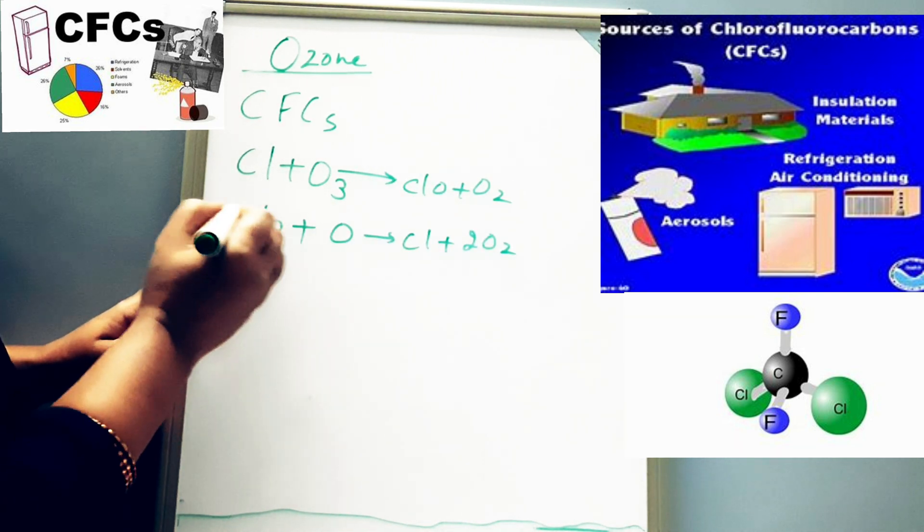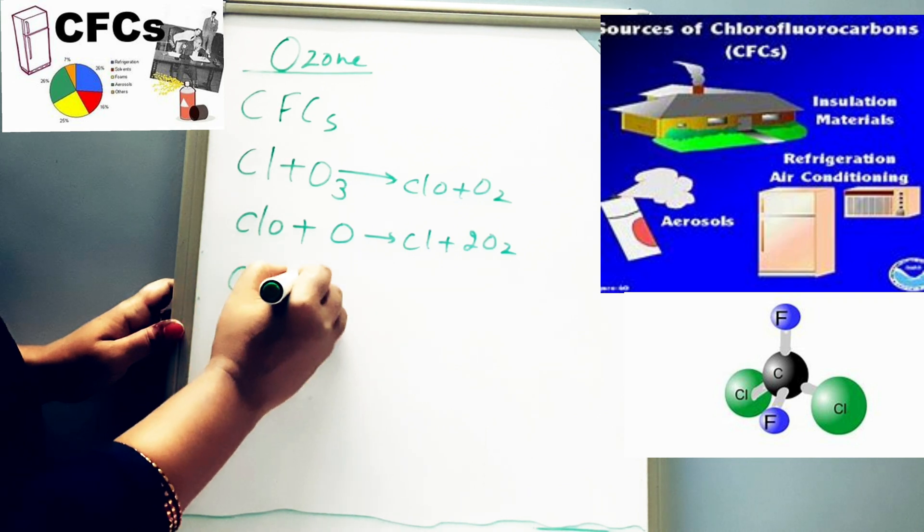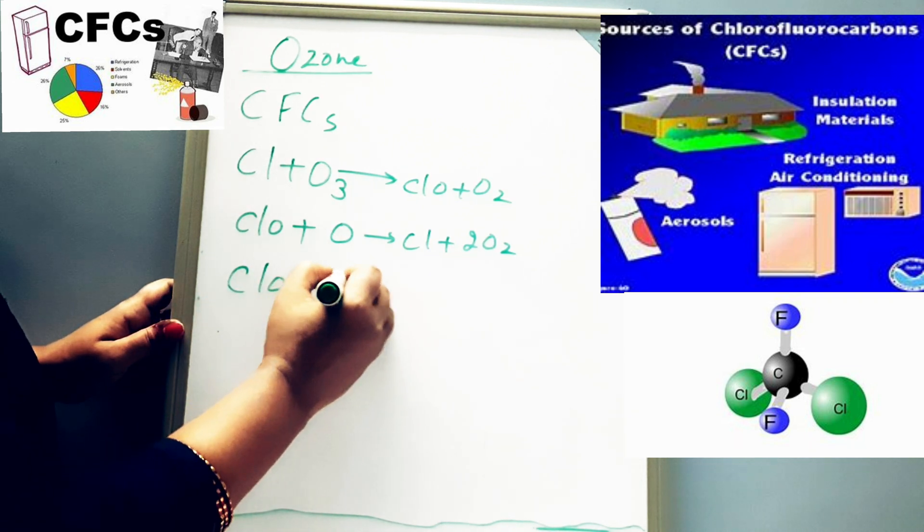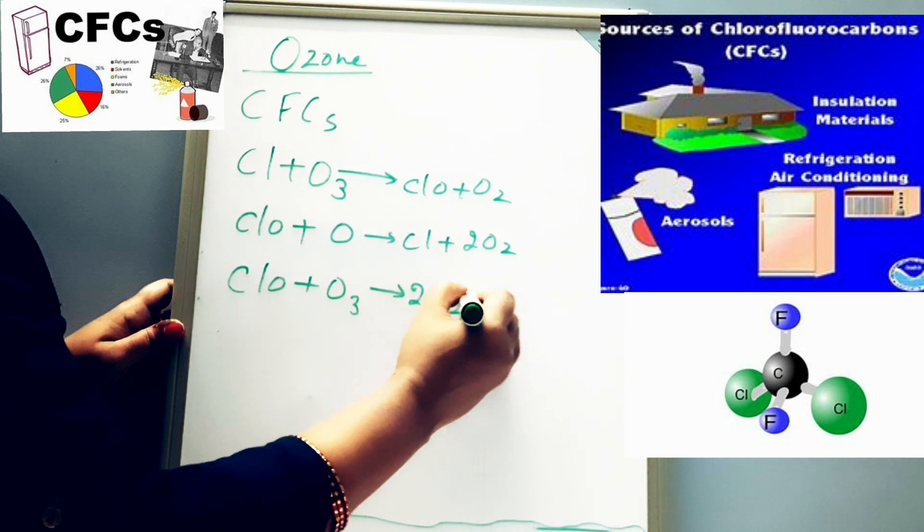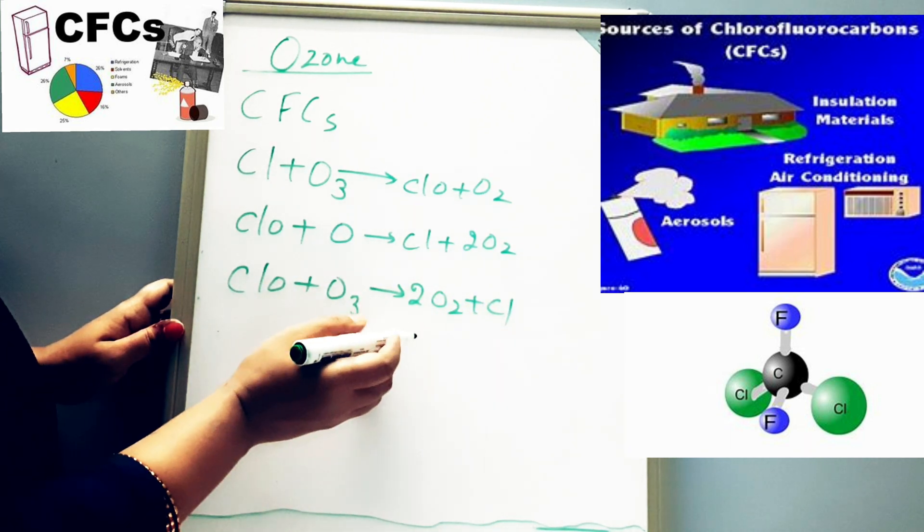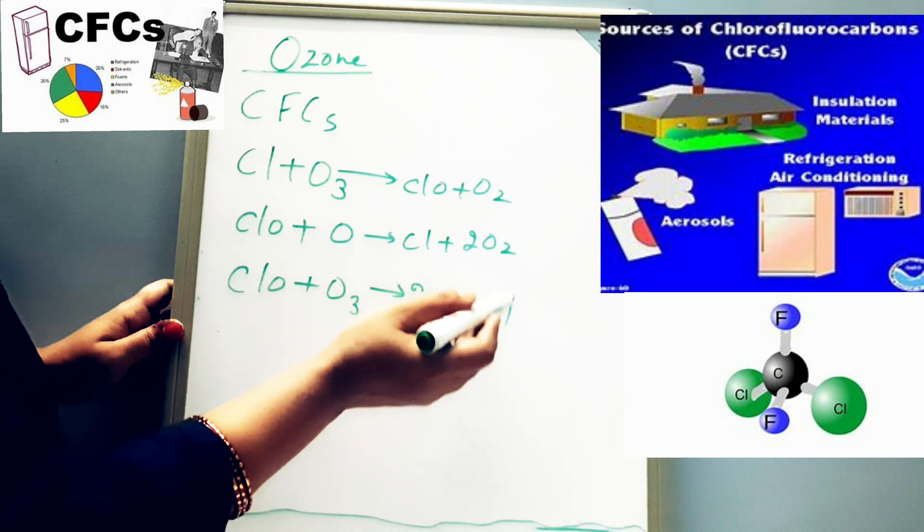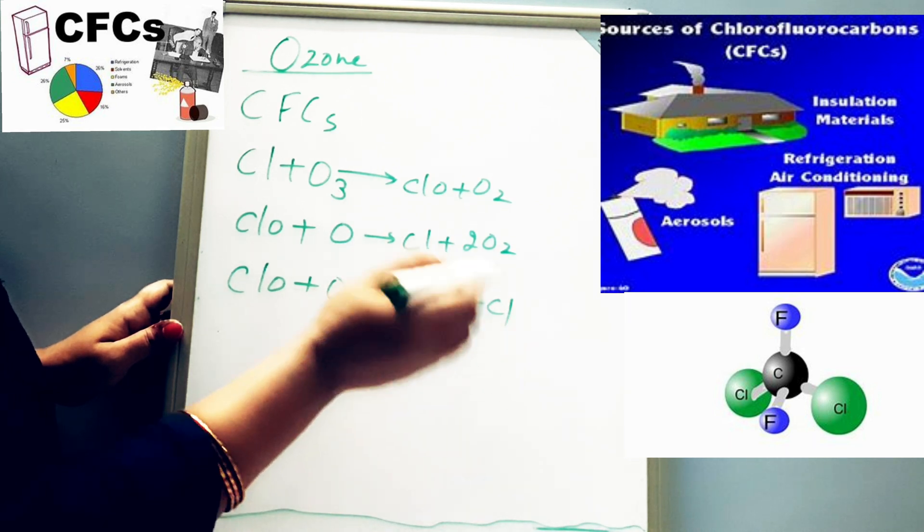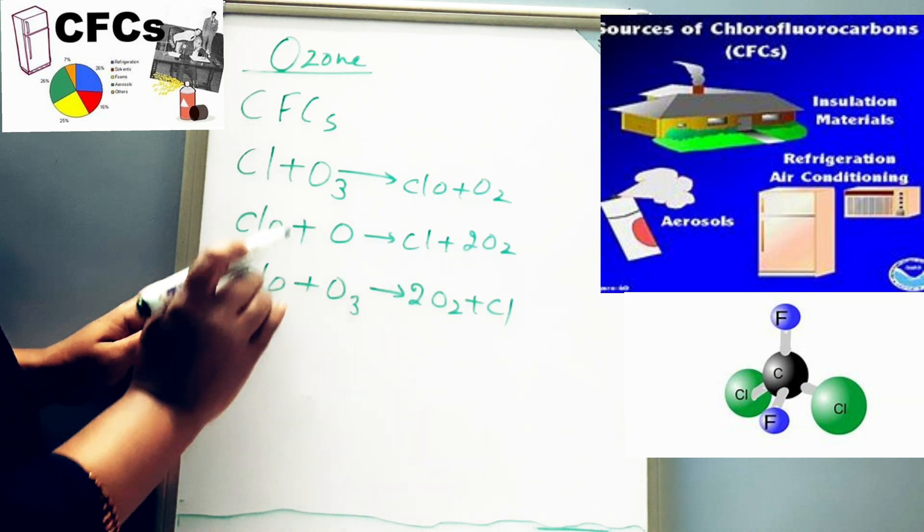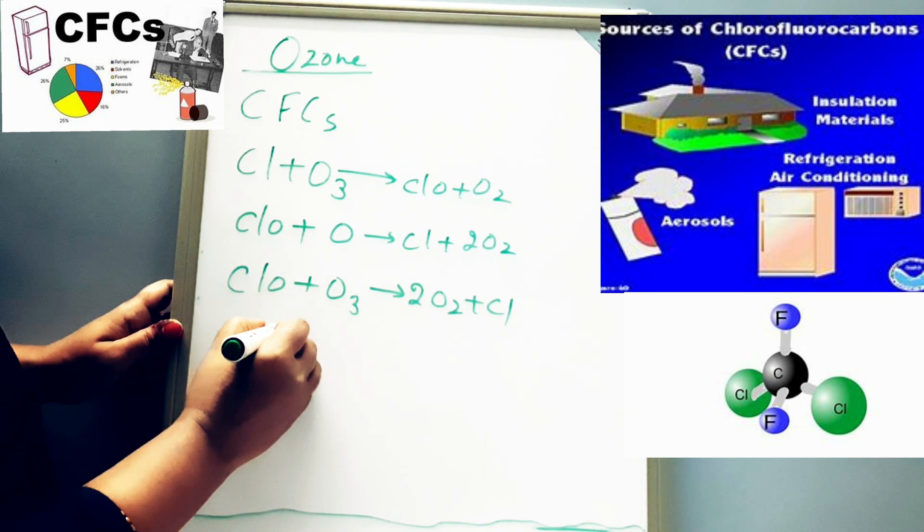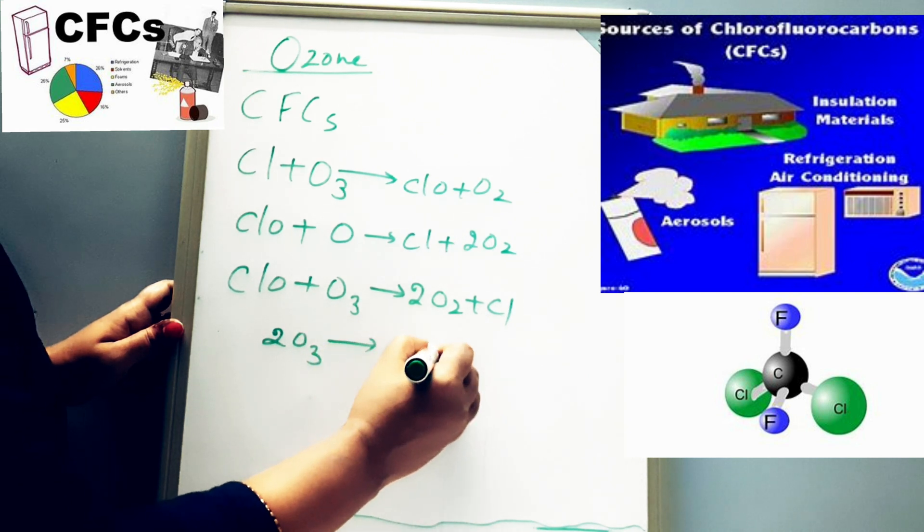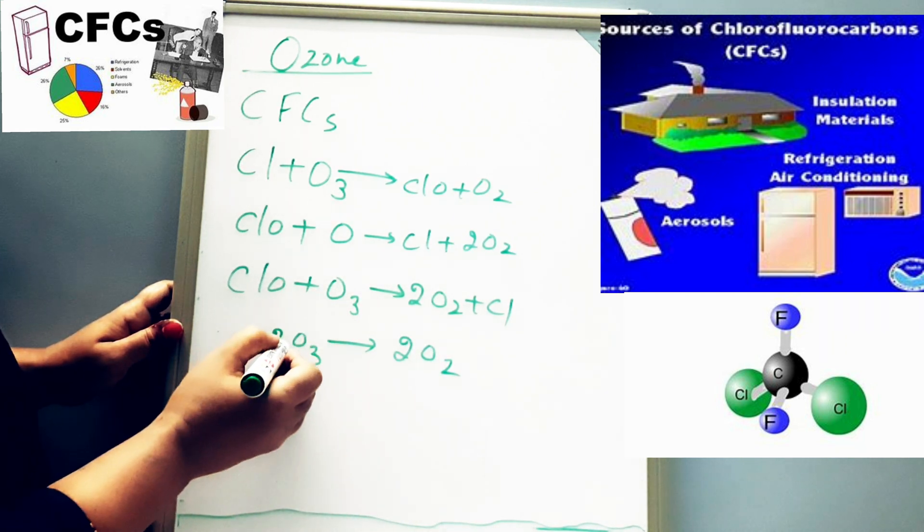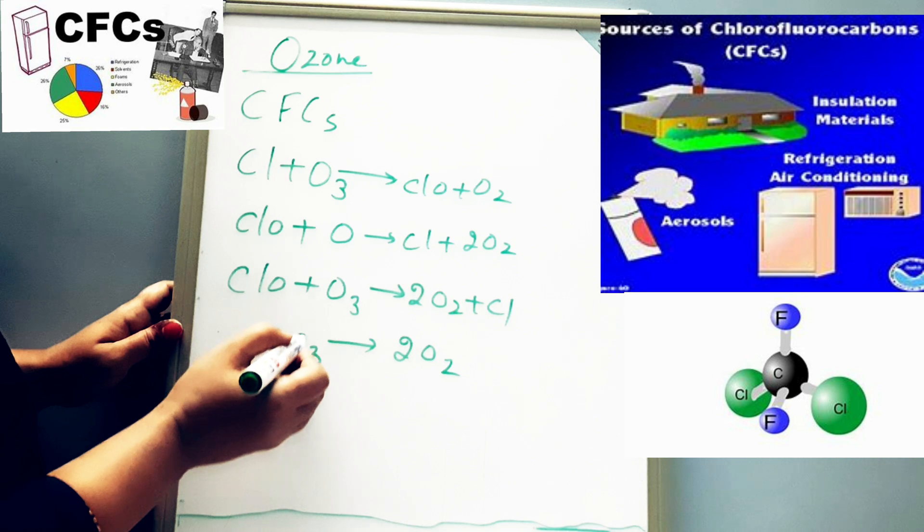Further what happens: ClO also combines with O₃ and forms 2O₂ + Cl. So as you can see, again this Cl is out in the stratosphere to react with next ozone. So in this way, 2O₃ will be converted into 2O₂. So two molecules of ozone get destroyed with this Cl.